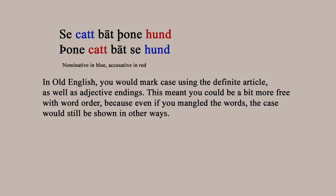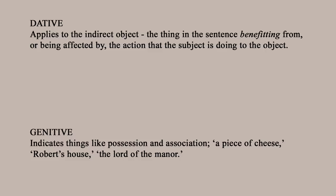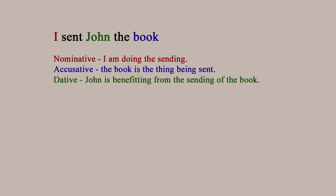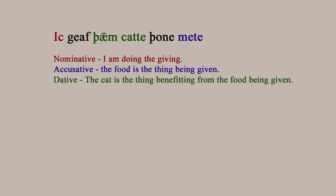The dative case and the genitive case are more complicated. The dative involves an indirect object — often the thing in the sentence being benefited by the action. So in English, 'I sent John the book': 'I' is the subject, 'the book' is the object, and 'John' is the indirect object because he's benefiting from me sending the book. An example from Old English: 'Ic geaf þam catte þone mete' — this would be a normal way of saying it, but 'þone mete geaf ic þam catte' would mean the same thing.